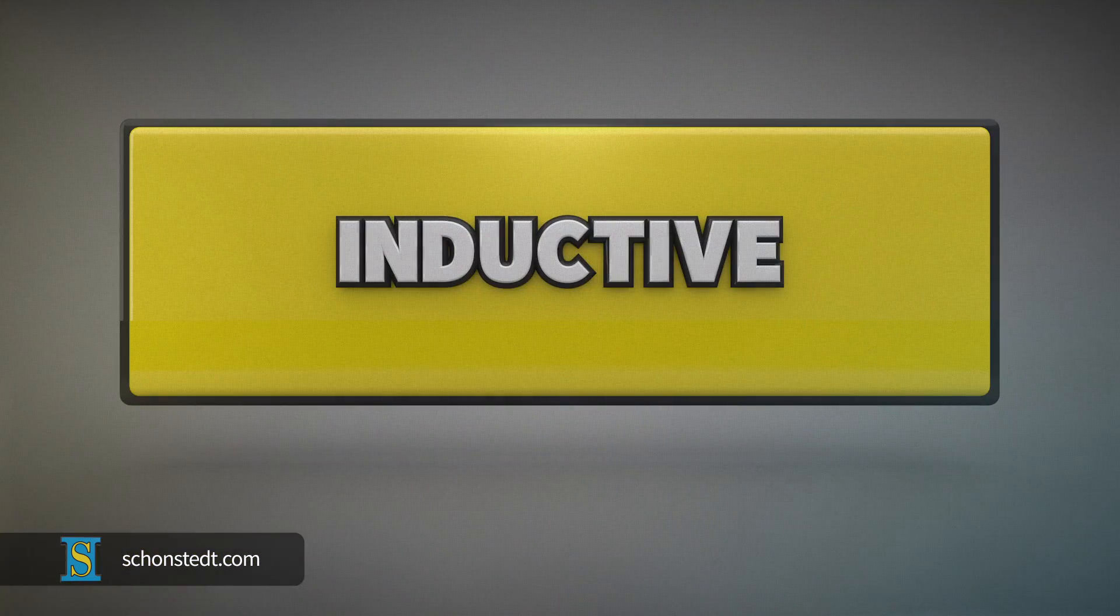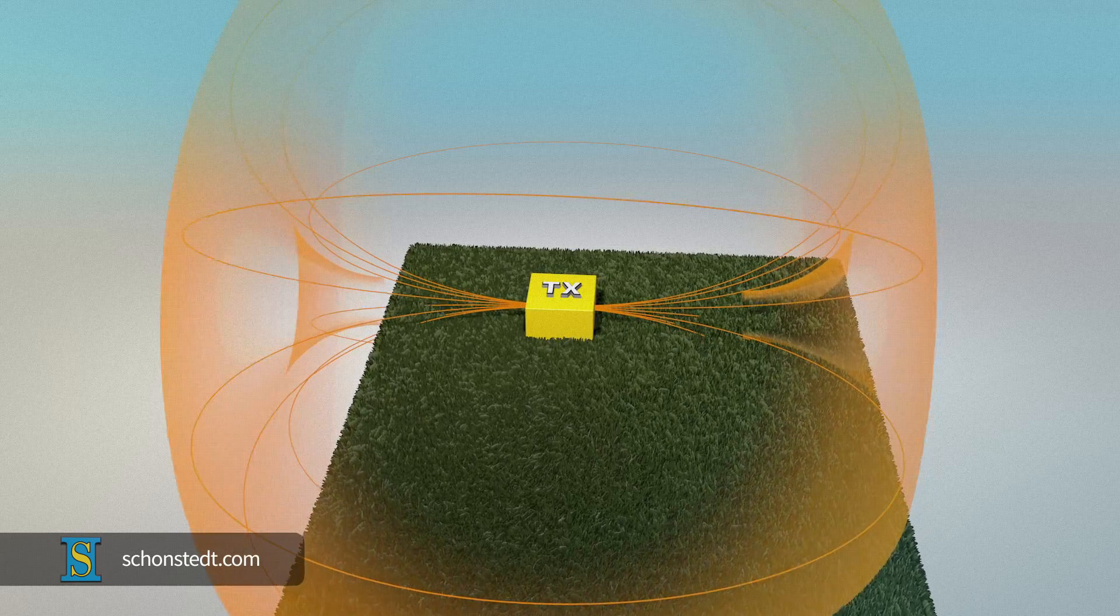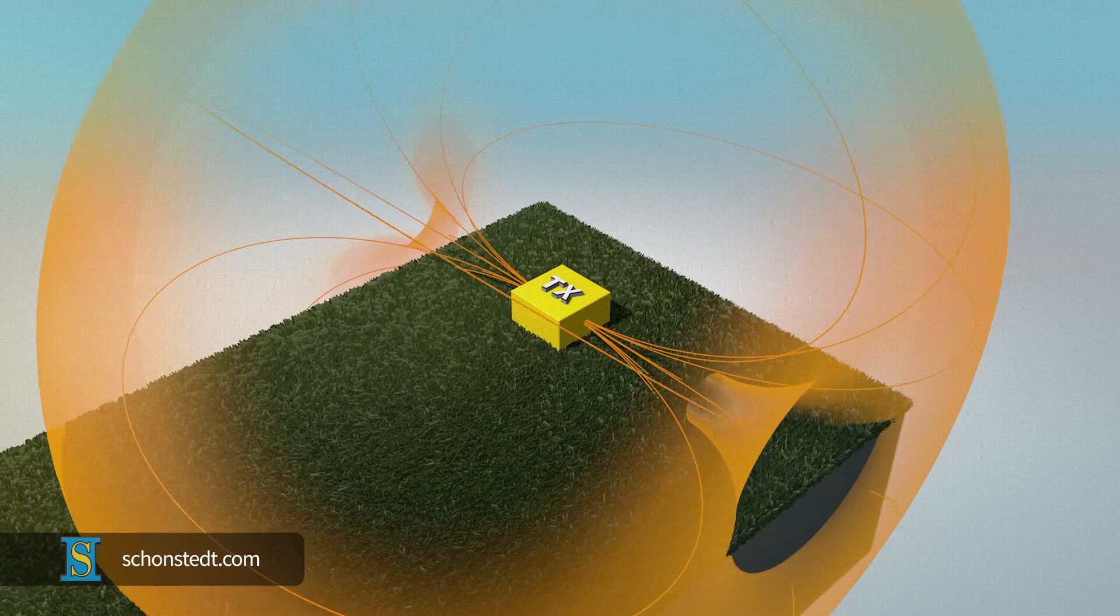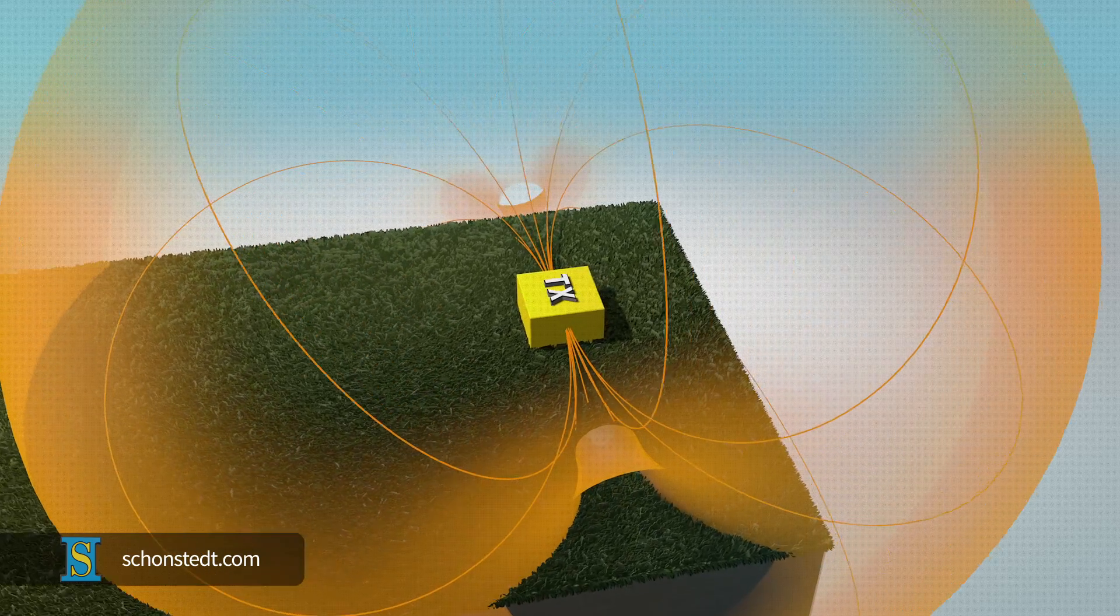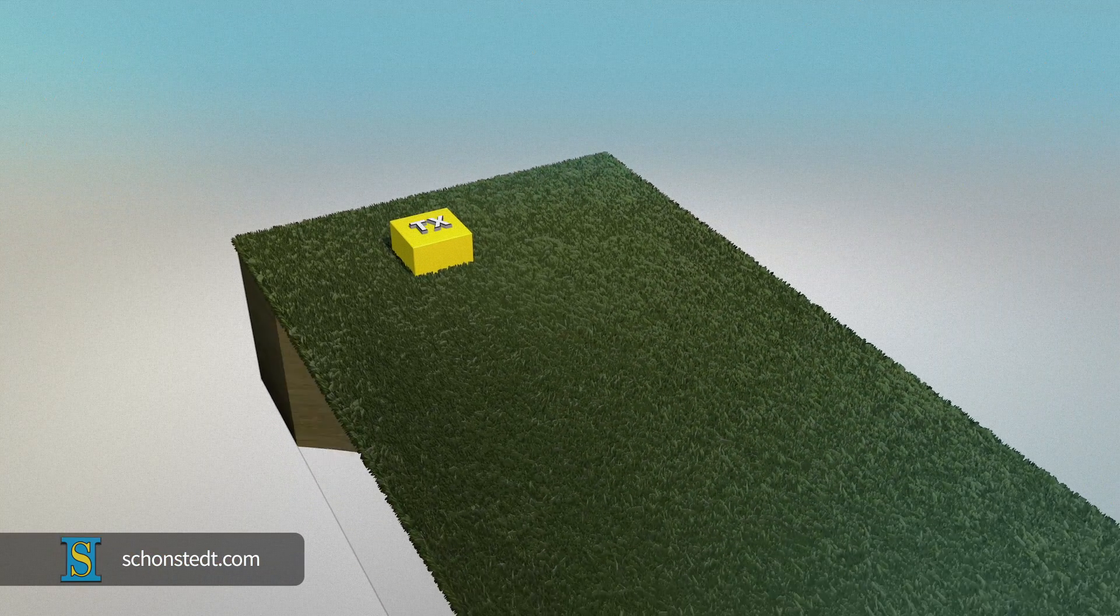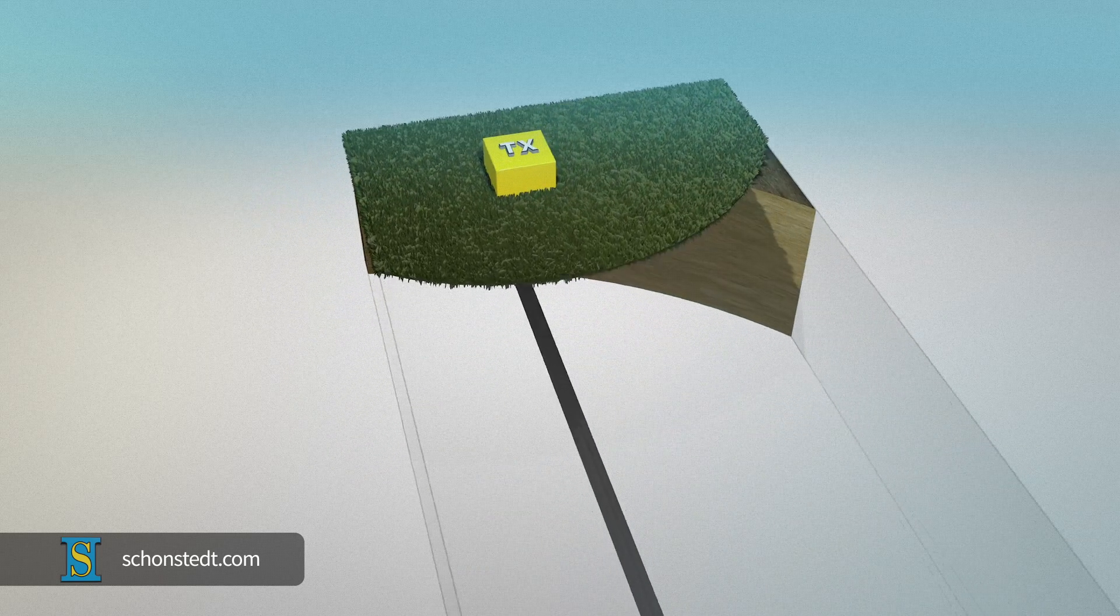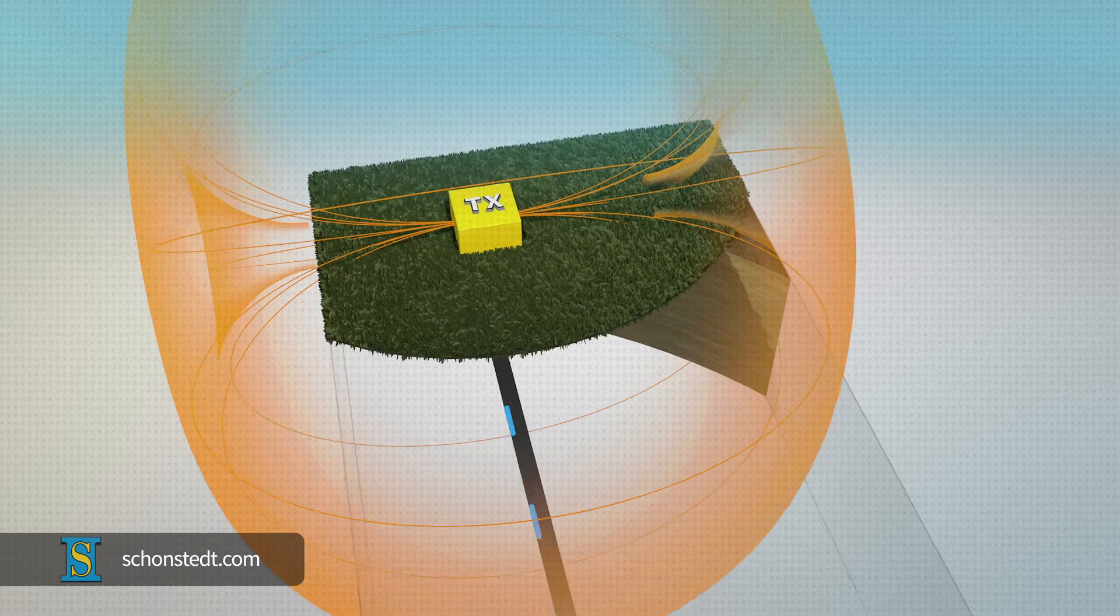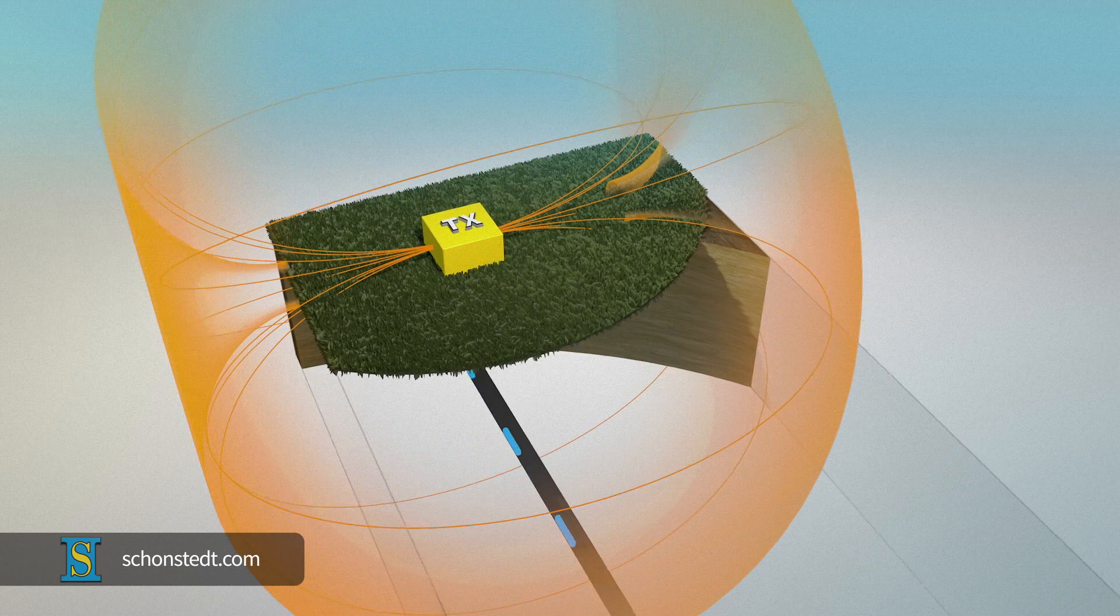For the inductive method, an antenna that is either built into the transmitter or attached to it as an accessory generates a signal that induces a current on the target pipe or cable. Place the transmitter, or the antenna attached to the transmitter, on the ground, directly over the pipe or cable. The arrow on the label should be parallel to the anticipated trace line direction.